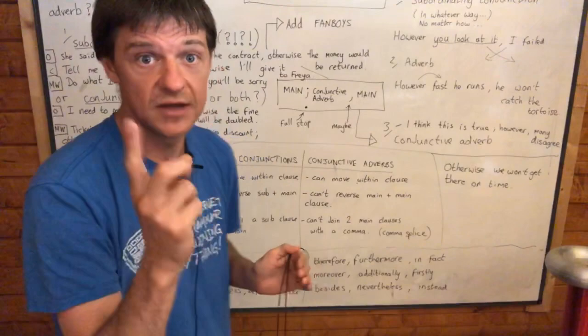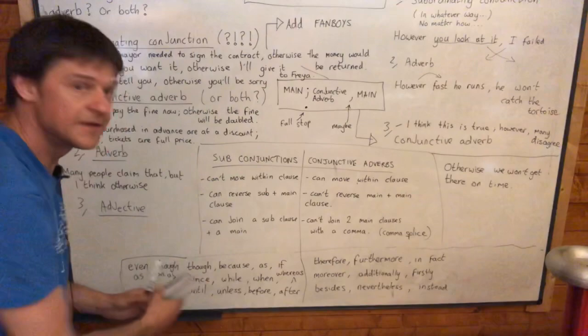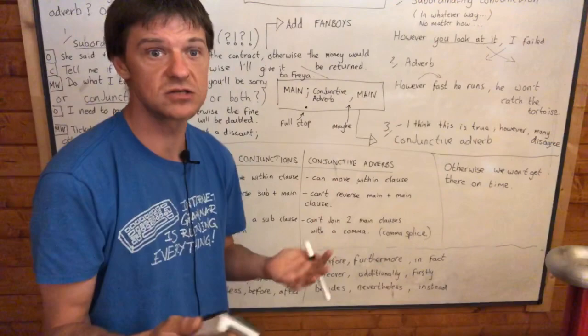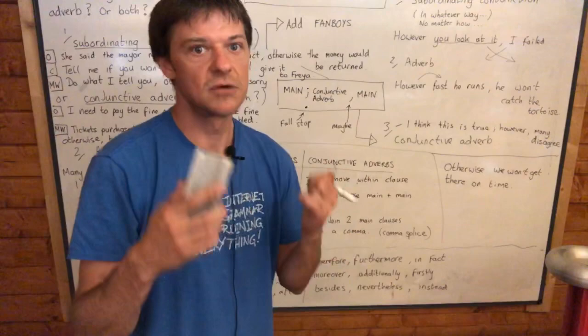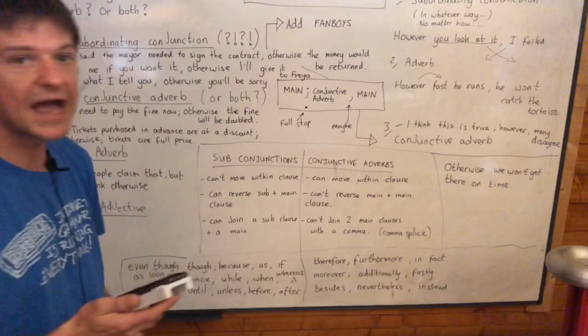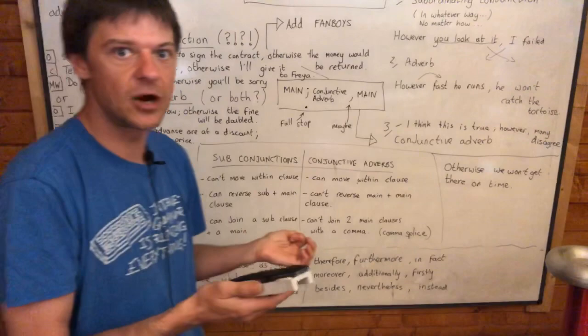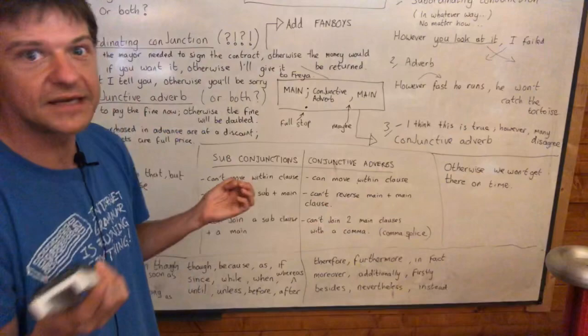To make this point really clear: with subordinating conjunctions you can reverse the sub and main clause. Take 'even though' — I can say 'even though it is hot, I don't want to go outside' or 'I don't want to go outside even though it is hot.' Same with 'because': 'because it is hot I don't want to go outside' or 'I don't want to go outside because it is hot.' Likewise: 'As it was raining, I came home on the bus' or 'I came home on the bus as it was raining.' And 'If I win one million pounds I will buy a yacht' or 'I will buy a yacht if I win one million pounds.' You can do that with subordinating conjunctions but not with conjunctive adverbs.